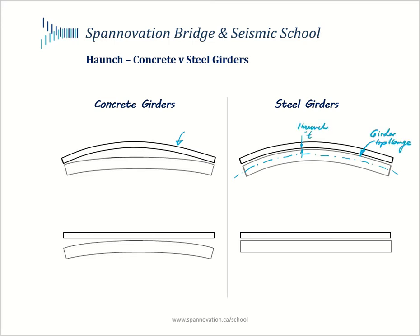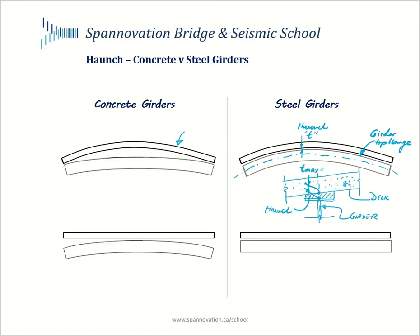You still need a certain thickness of haunch to account for the transverse cross slope and any geometry variations from fabrication and construction tolerances. In general, for steel girder bridges, we assume a maximum haunch height of 50 millimeters measured at the centerline of the girder. The contractor would need about half an inch minimum thickness of haunch to account for construction tolerances. If you have a zero cross slope and depending upon the height of your shear stud connectors, you may be able to get away with a haunch of as low as half an inch on steel plate girder bridges.